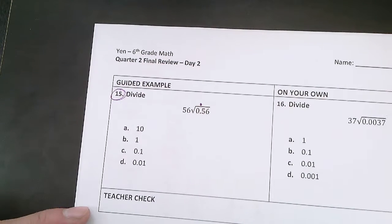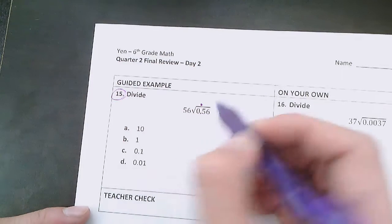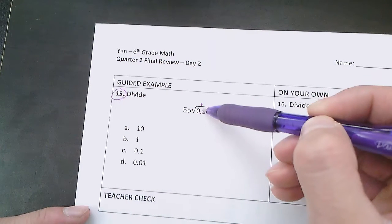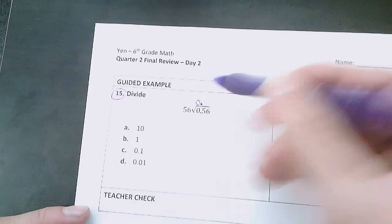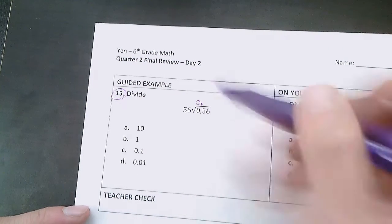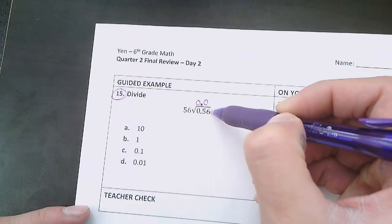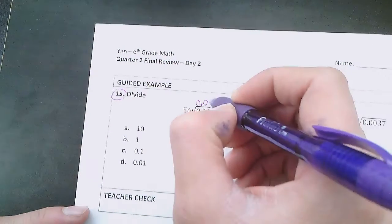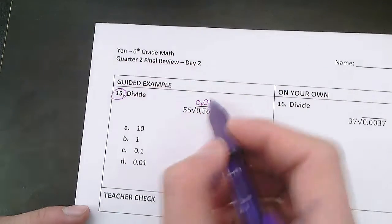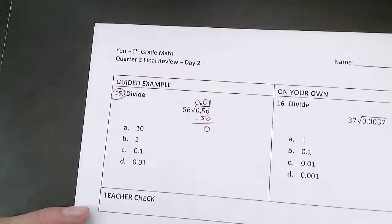You bring it straight up and then divide normally. So here, 56, 56 can't go into 0, so I'll put a 0 up there. Can 56 go into 5? It can't, so I put another 0, but can 56 go into 56? Yes, it can. My 1 goes there, because 1 times 56, that gives me 0, no remainders.